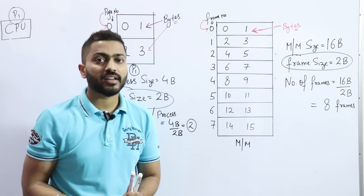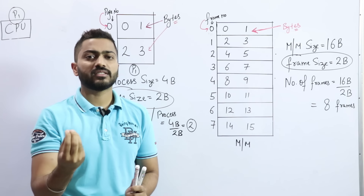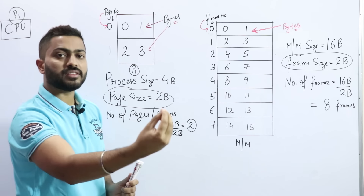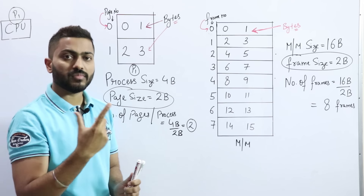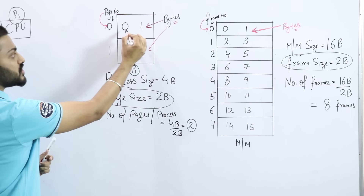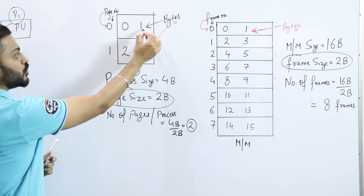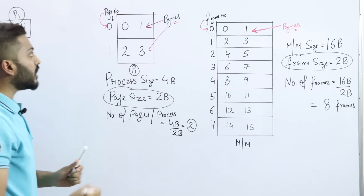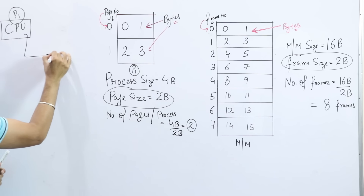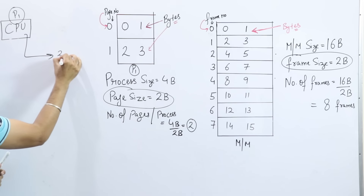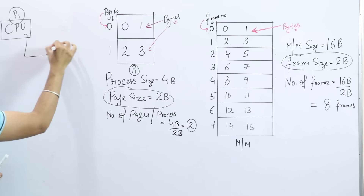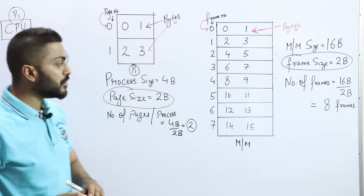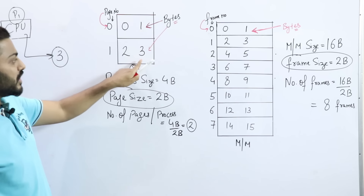How does the CPU make this call? It simply says, 'Let's say I need byte number 3.' Meaning, out of the 4 bytes in P1 — 0, 1, 2, 3 — the CPU says 'I need byte number 3,' which is this particular byte.